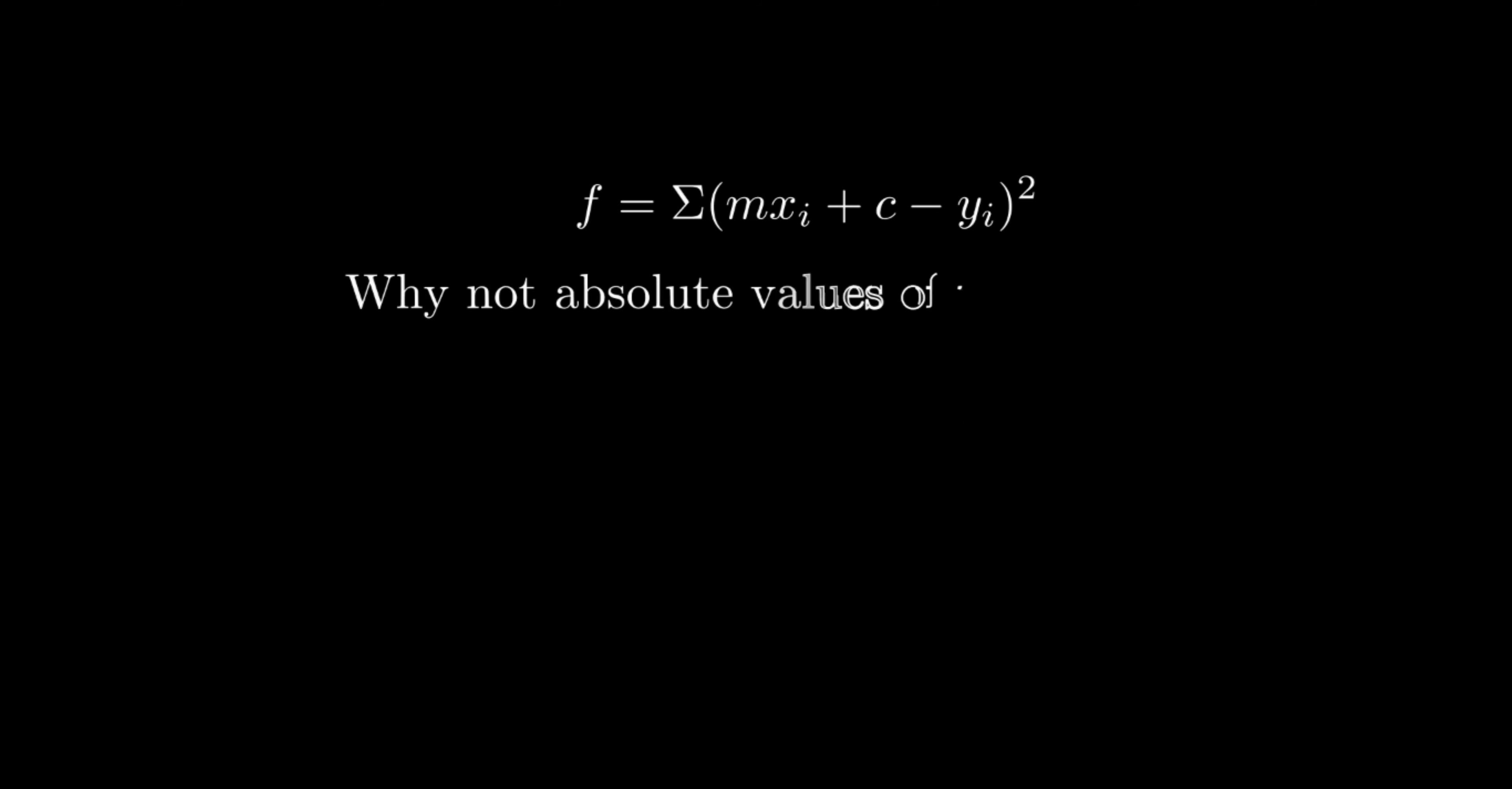Now the question could also be why not absolute value of residuals? The answer is that squaring the residuals exaggerates the points that are away from the line. Say residual of 0.5 would be given a value of 0.25, but residual of 5 would be given a value of 25. This function would be favoring points that are nearer to the line. The farther the point, the more square error accumulates.